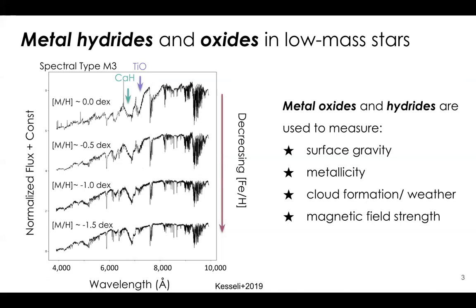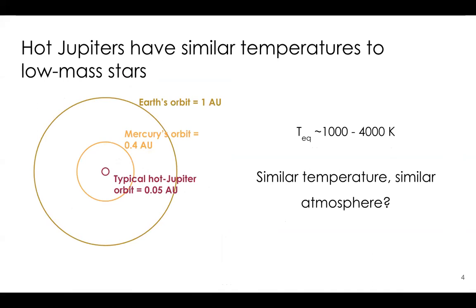Now onto the exoplanet part. A lot of the hot Jupiters whose atmospheres we can measure have similar temperatures to low-mass stars. Here's a scale diagram: if Earth is at 1 AU, Mercury is at 0.4 AU, but the typical hot Jupiter is way closer, at 0.05 AU. They usually have equilibrium temperatures between 1000 K and up to about 4000 K for the hottest known hot Jupiter, KELT-9.